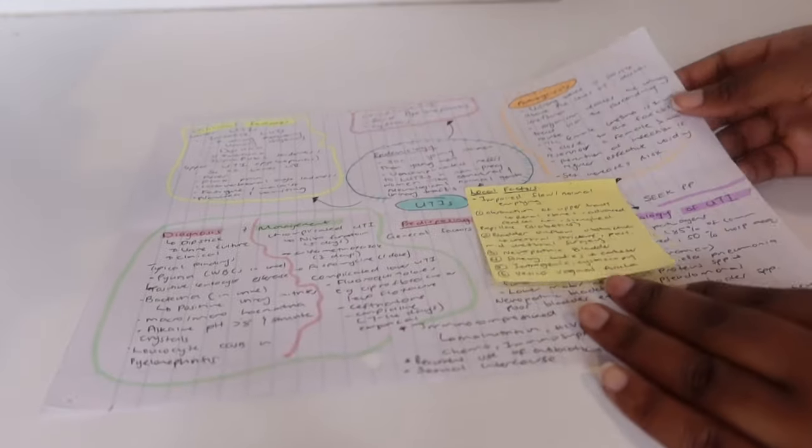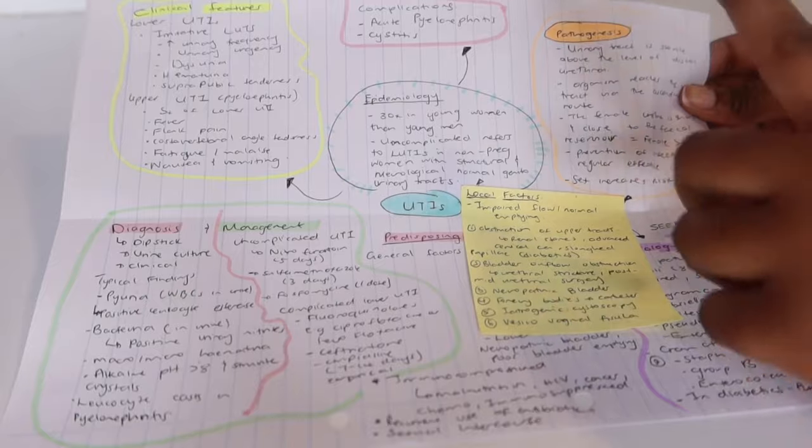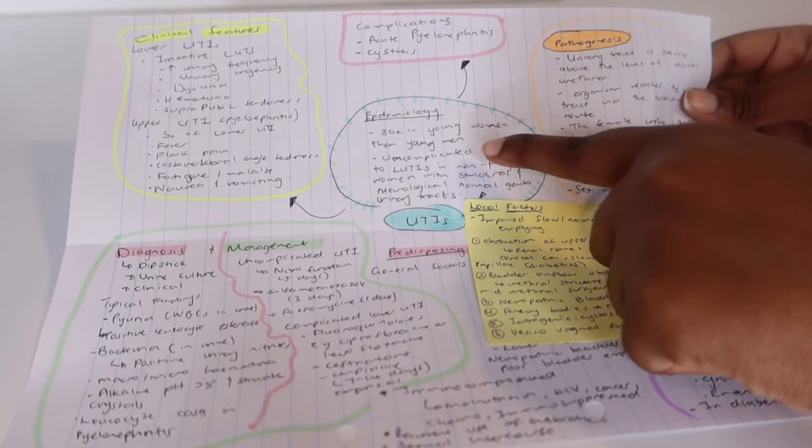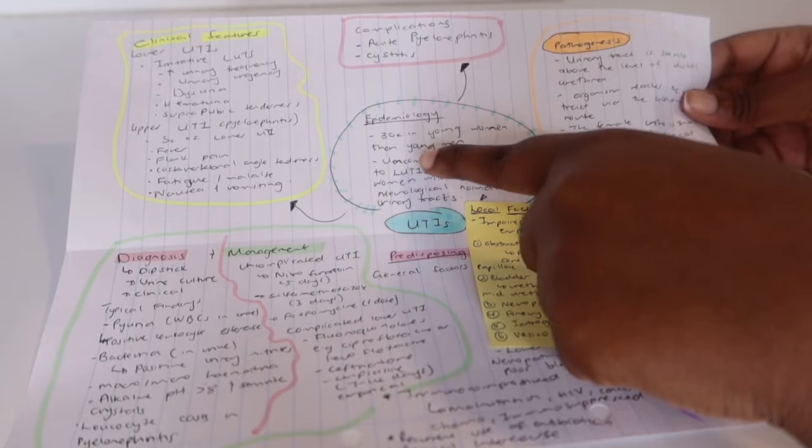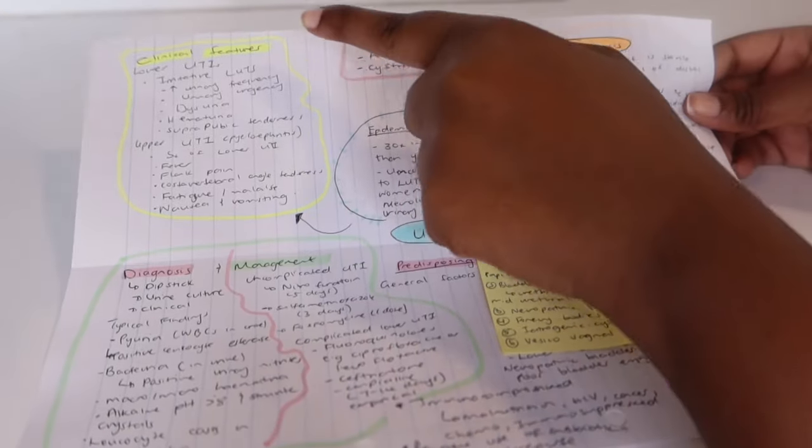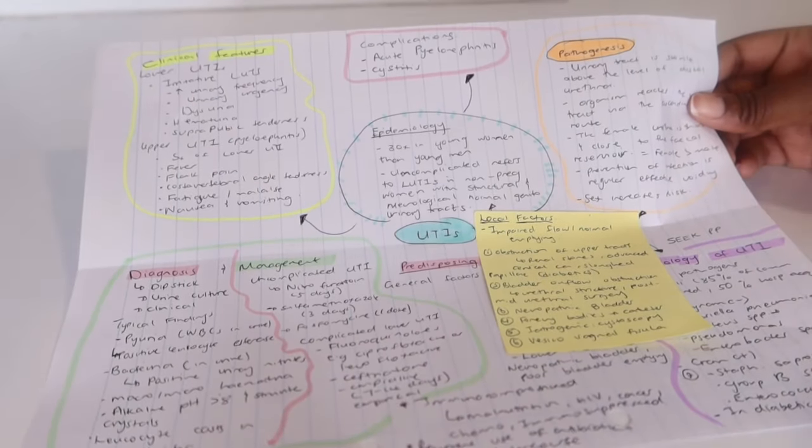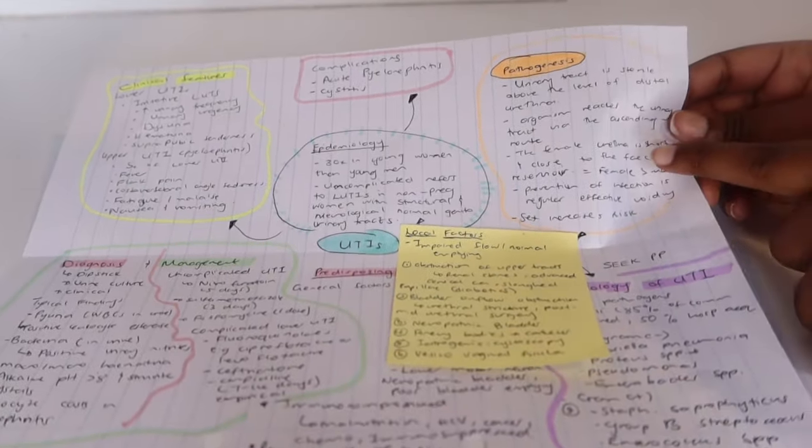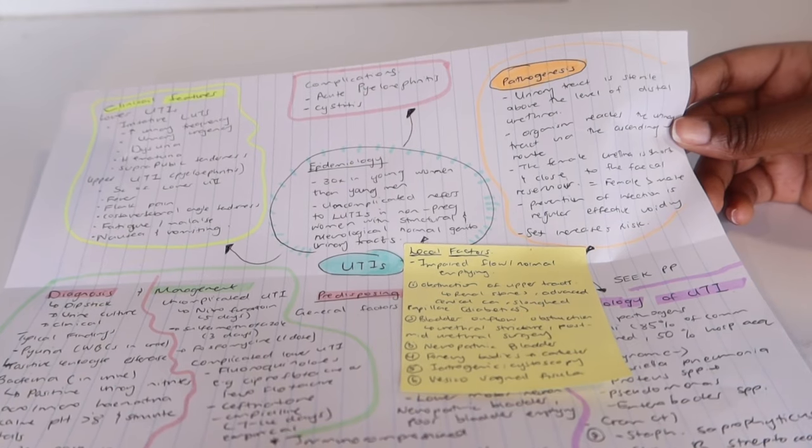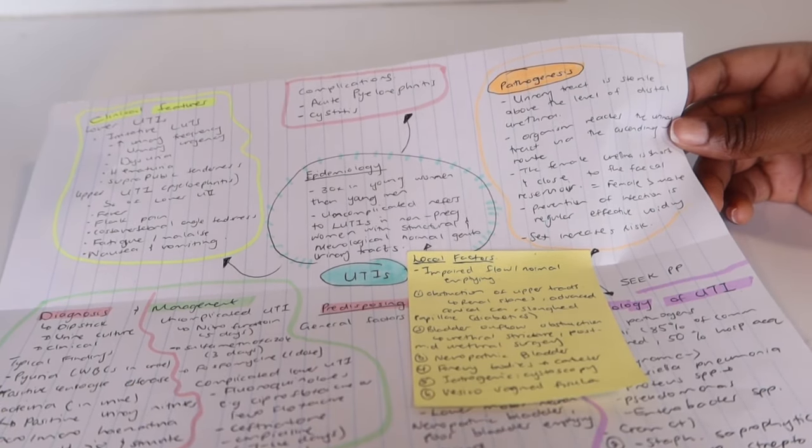This is one example of a mind map that I made yesterday when I was learning about UTIs. As you can see, I have my topic UTIs there in the middle. Then I went to create a bubble of, okay, what is the epidemiology? And I wrote in short sentences, what needed to go into that box. I went on to summarize the clinical features in bullet points. I wrote down and I put it in the box. And then I went down to learn about the pathogenesis. So I had to summarize in my own words what the pathogenesis is. And also summarizing in your own words helps you retain that information because it helps with your memory as well.